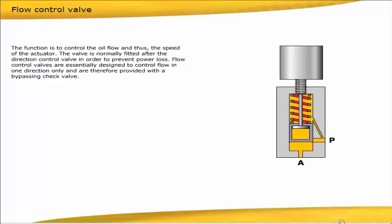Flow control valves are essentially designed to control flow in one direction only, and are therefore provided with a bypassing check valve. The direction of flow is from P to A. By moving the piston downwards, it will choke the oil flow.